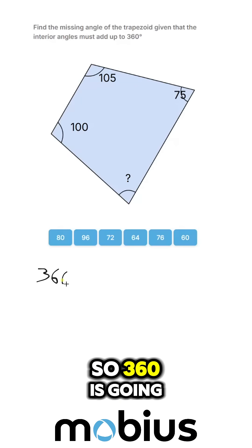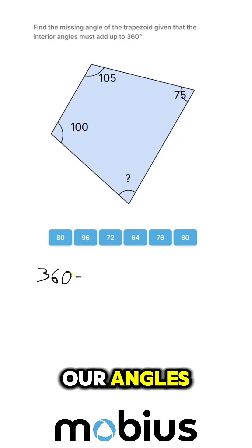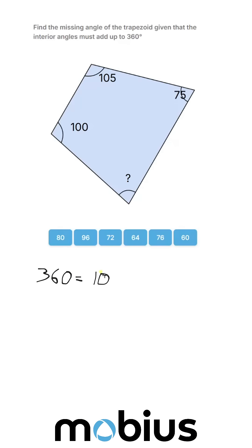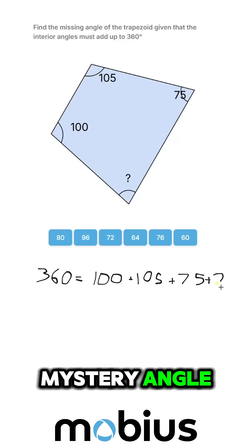So, 360 is going to be the sum of our angles. That's going to equal 100 plus 105 plus 75 plus our mystery angle.